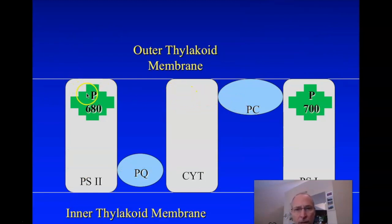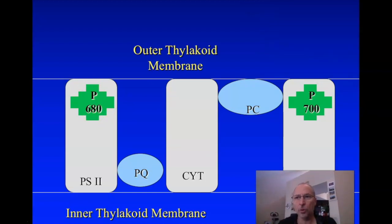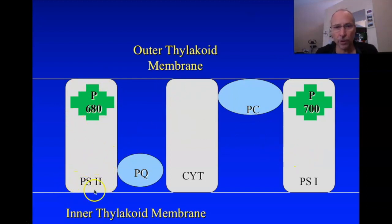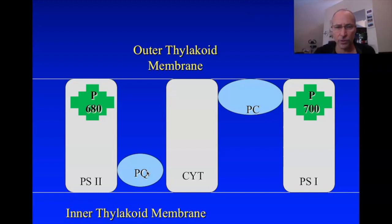Here in the thylakoid membrane are a series of antenna pigment systems. The first one we'll talk about is called P680, named because it absorbs maximally at 680 nanometers. It's embedded in a large protein complex called a photosystem. There are two photosystems — photosystem one and photosystem two — and we're going to start with photosystem two, because that's really where the electron transport chain begins. Photosystem one was discovered first and associated with something else, which is why the numbering seems backward.